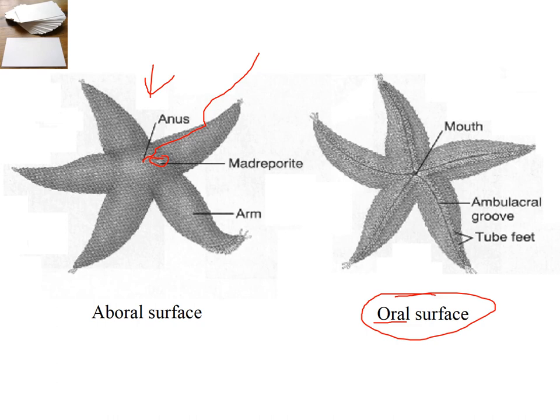The madreporite is up at the surface, and the extensions are called arms. The mouth is in the center with the tube feet coming out. The ambulacral groove — 'ambulatory' meaning able to move or walk — is where the tube feet emerge. This groove can widen so the tube feet stick out more, or seal into a very narrow gap so predators can't get into it easily.